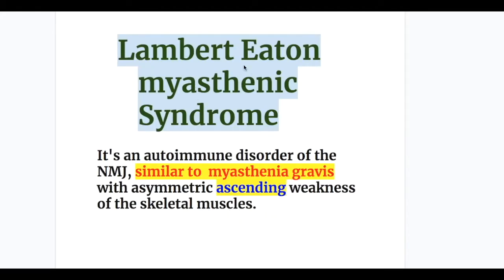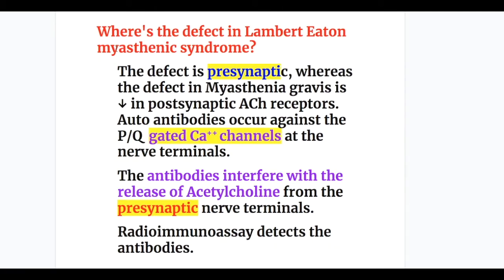Lambert-Eaton myasthenic syndrome, like myasthenia gravis, is an autoimmune disorder at the neuromuscular junction with weakness of the skeletal muscles. The defect in LEMS is presynaptic, whereas the defect in myasthenia is postsynaptic, affecting the acetylcholine receptors. In Lambert-Eaton syndrome, autoantibodies occur against the P/Q voltage-gated calcium channels at the nerve terminals.